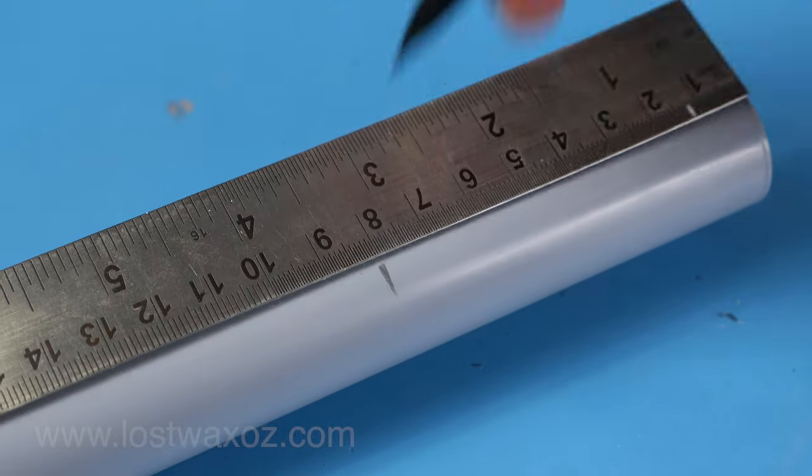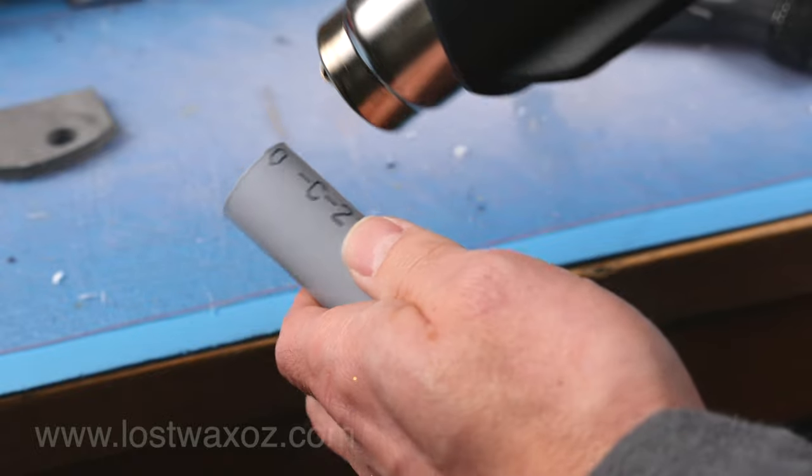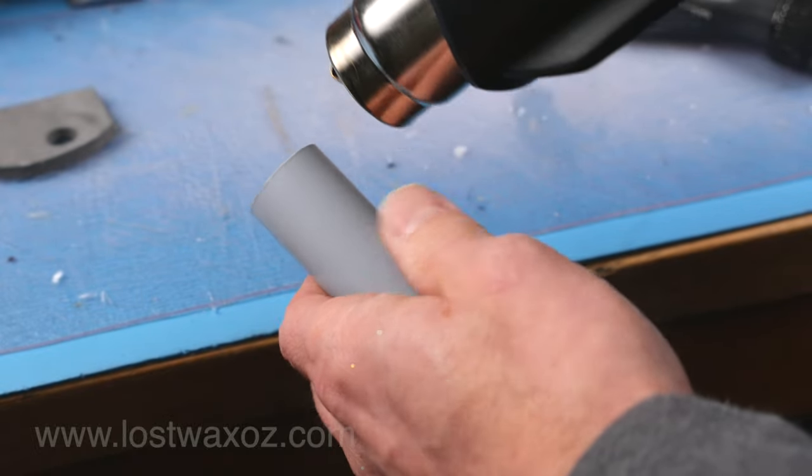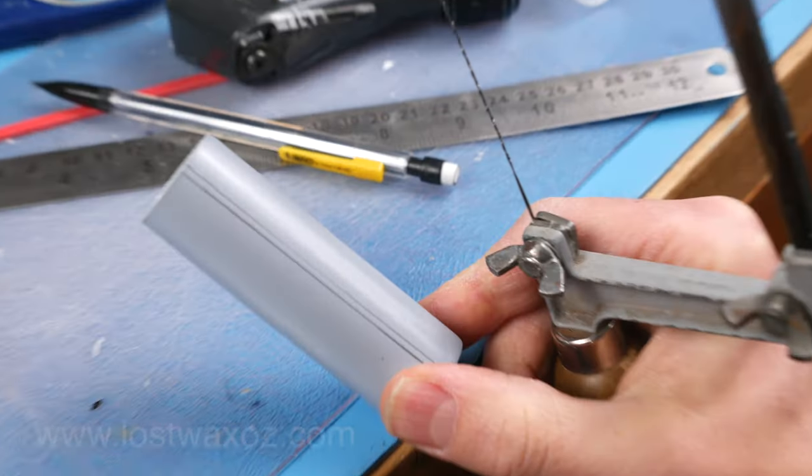Cut a piece that's 81 millimeters long. If you used a tubing cutter you'll want to get rid of that extra ridge on the end. You can do that by warming it up with a heat gun until it disappears.